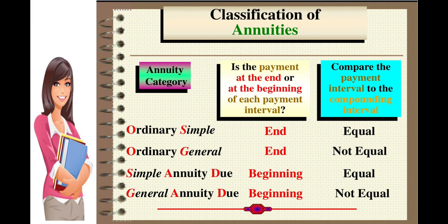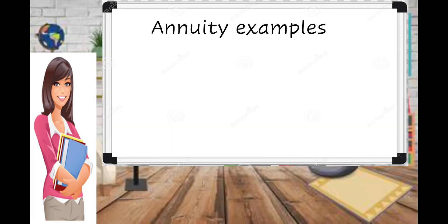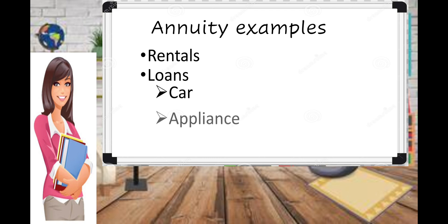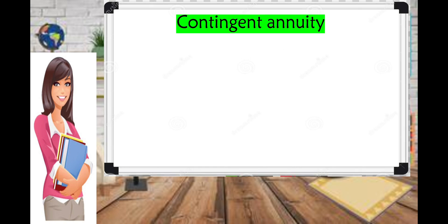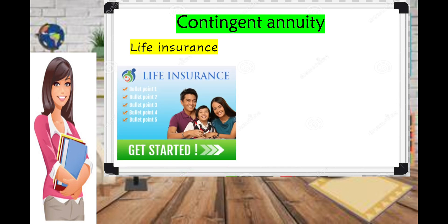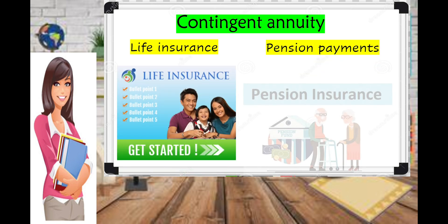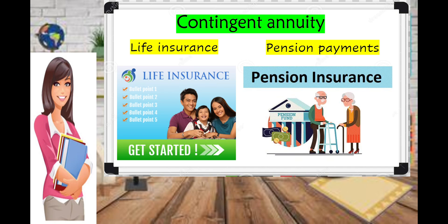That's how we classify annuities. Examples of annuity in real life include rentals, loans for cars, appliances, house and lot, tuition fees — where you pay monthly — and also '5-6' lending. For contingent annuity, we have life insurance and pension payments.